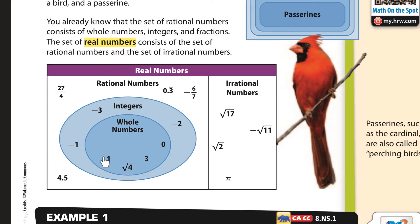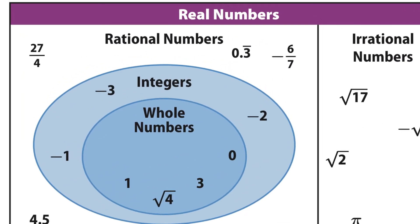Let's start with whole numbers. The square root of 4 equals 2, that's why it's a whole number. Whole numbers are our counting numbers including 0. All of these whole numbers are also inside of the integers. Integers are the positive and negative whole numbers — you can have your whole numbers and the negative versions of all those whole numbers. So if you're a whole number, you're also an integer, but just because you're an integer does not necessarily make you a whole number.